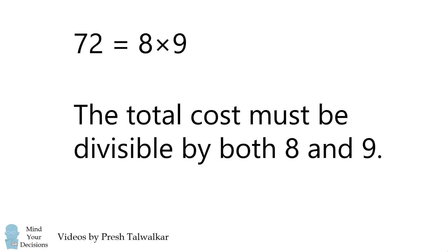So now, let's solve the problem using logic to understand it in another way. The key insight is that 72 is equal to 8 times 9. This means the total cost must be divisible by both 8 and 9.